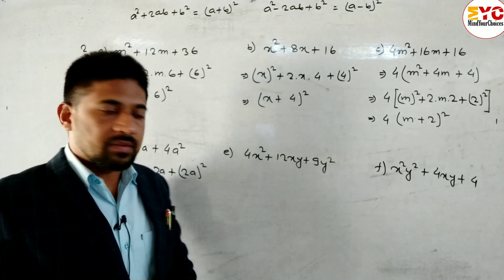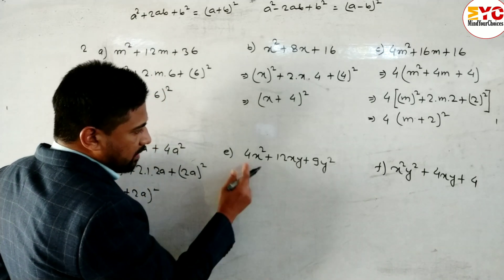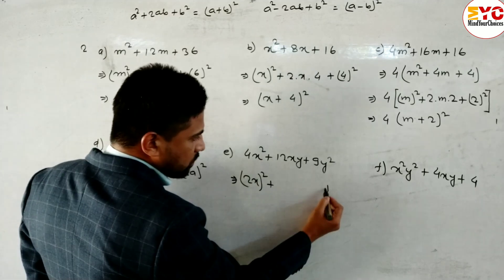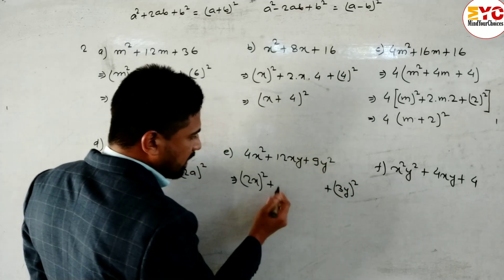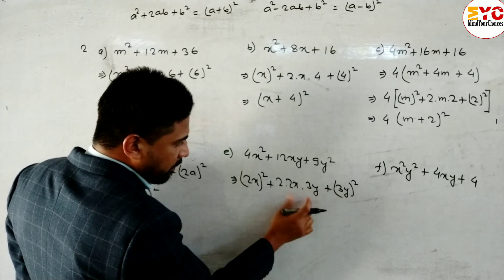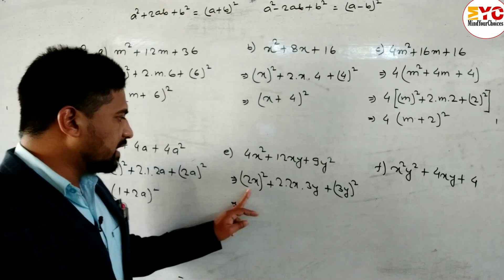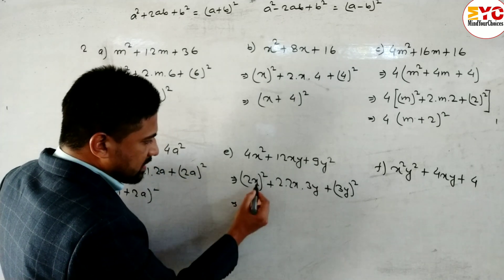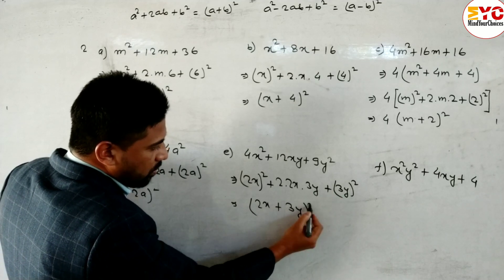For Question 2e: 4x² + 12xy + 9y². No common factor. First term: 4x² = (2x)², last term: 9y² = (3y)². Middle term 2ab = 2·2x·3y = 12xy. This is in the form a² + 2ab + b², with a = 2x and b = 3y, so the answer is (2x + 3y)².